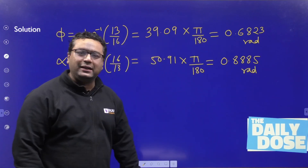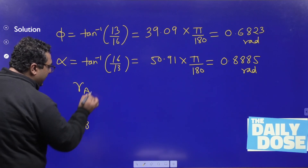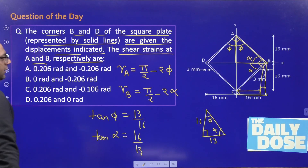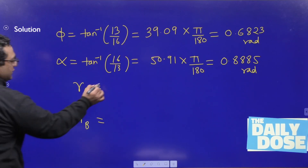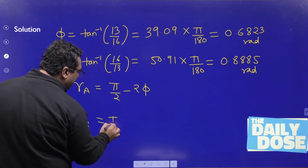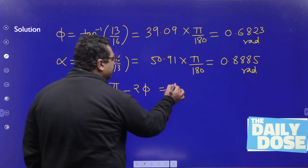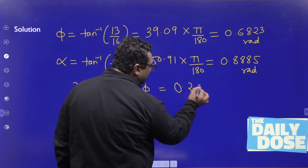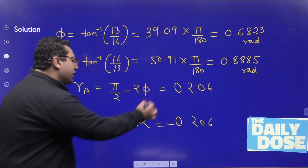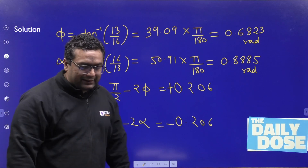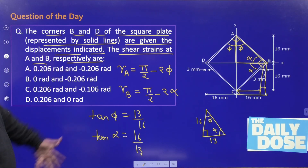These are the values of the two angles. Now, finding gamma at A and gamma at B: gamma_A = π/2 − 2·phi, and gamma_B = π/2 − 2·alpha. Substituting the radian values and solving, gamma_A comes out to be −0.206 and gamma_B comes out to be +0.206.